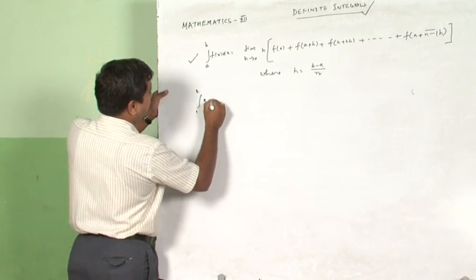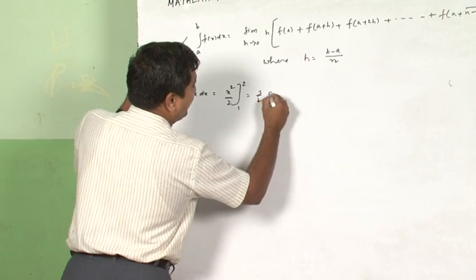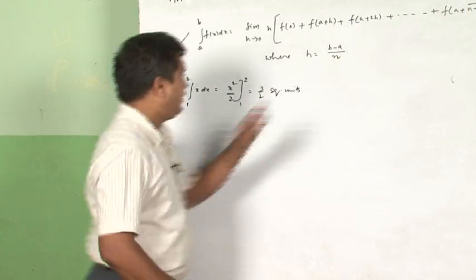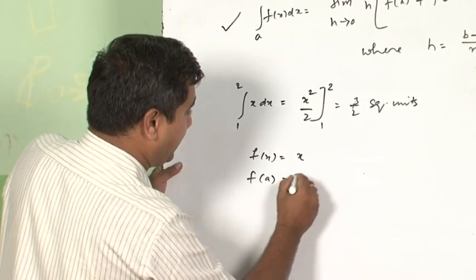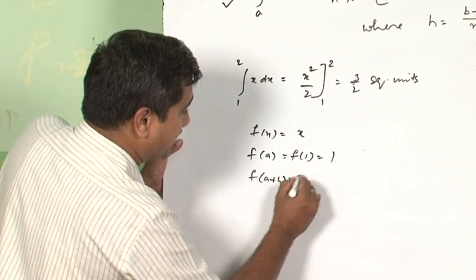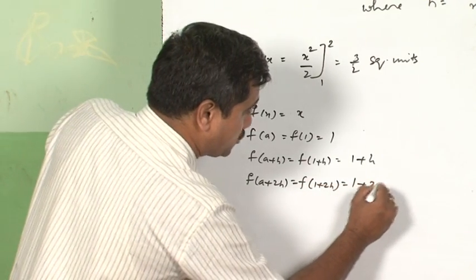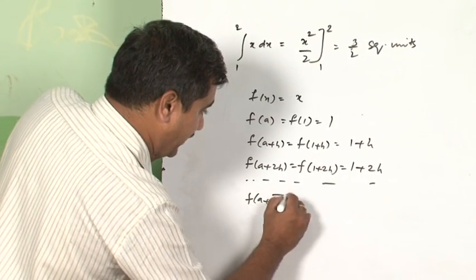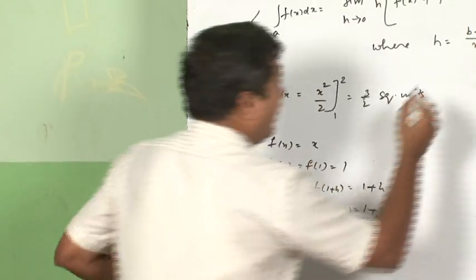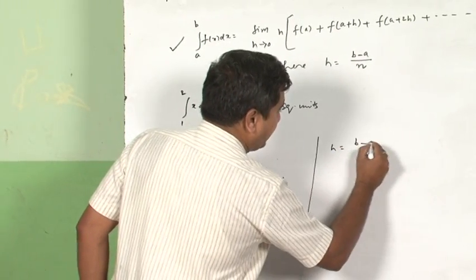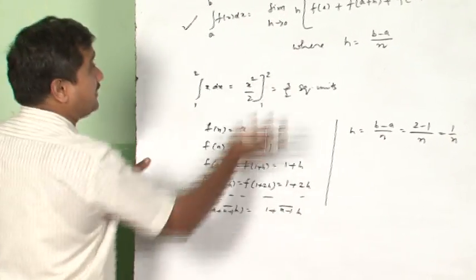For example, if I want to evaluate 1 to 2 x dx using the limit of a sum. In fact, I can directly calculate it as x square by 2 and 1 to 2 is going to be 3 by 2 square units because it is representing the area. But I would be getting 3 by 2 even using this formula. How am I going to do that? Here, f of x is going to be x. So, f of a that is a is equal to 1. A is equal to 1 means f of 1 is equal to 1. f of a plus h that is f of 1 plus h is going to be 1 plus h. f of a plus 2 h that is going to be f of 1 plus 2 h that is 1 plus 2 h and so on so forth. f of a plus n minus 1 into h is equal to 1 plus n minus 1 into h. So, I would be directly substituting the value here and before which I can find out even the value of h is equal to b minus a upon n that I can say b is equal to 2, 2 minus 1 upon n that is equal to 1 by n.